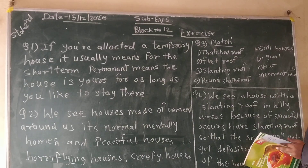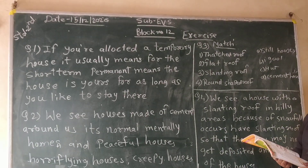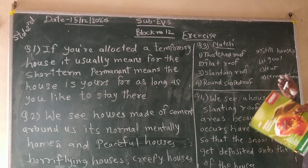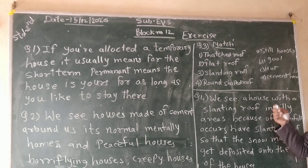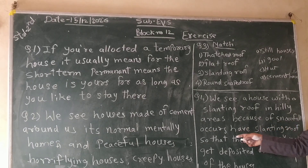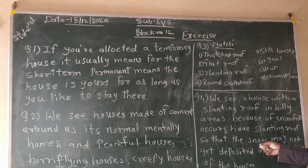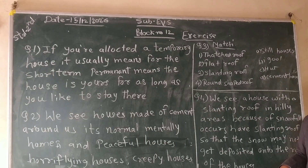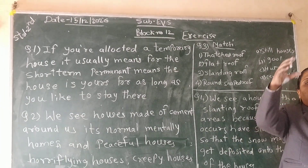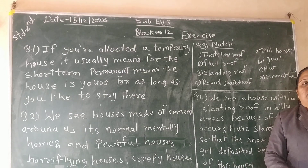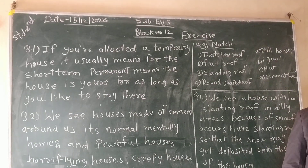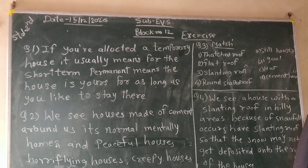Question number four: Where do you see a house with a slanting roof? We see houses with a slanting roof in hilly areas. Because snowfall occurs there, houses have slanting roofs so that the snow does not deposit on the roof — the snow falls down along the sloping roof.